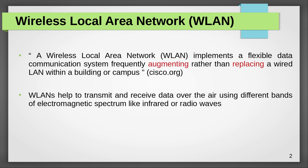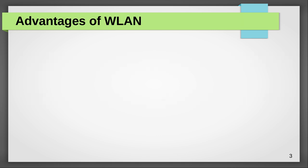The wireless LAN helps to transmit and receive data over the air using different bands of the electromagnetic spectrum like infrared or radio waves. Now let's look at some of the advantages of the wireless LAN.